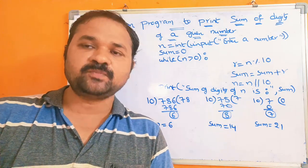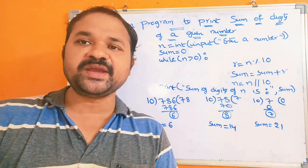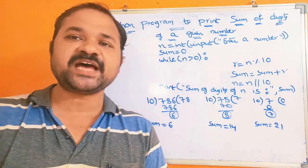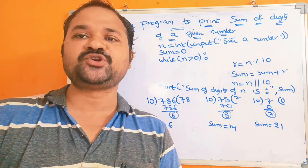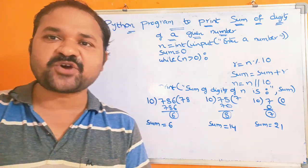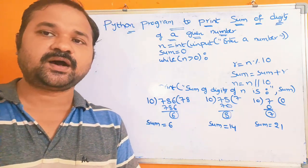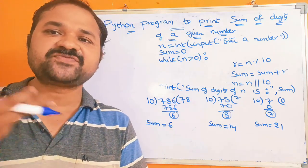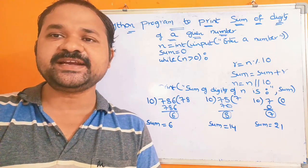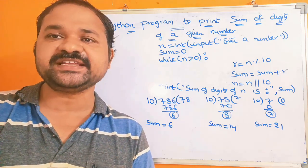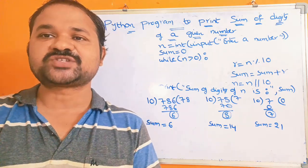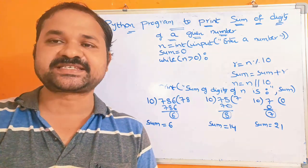In this video we are going to discuss a Python program to print the sum of digits of a given number. Let the number be 123. The digits in 123 are 1, 2, and 3, so the sum of 123 is 6.